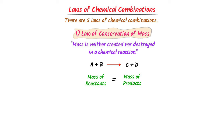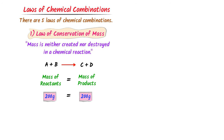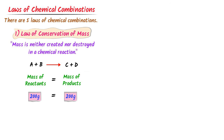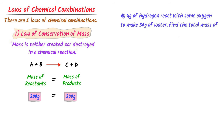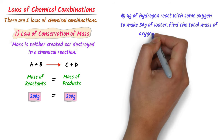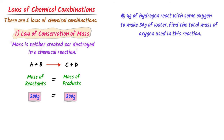If the mass of reactants is 200 grams, then the mass of products would also be 200 grams. To learn this concept further, consider this numerical problem: 4 grams of hydrogen react with some oxygen gas to make 36 grams of water. Find the total mass of oxygen used in this chemical reaction.